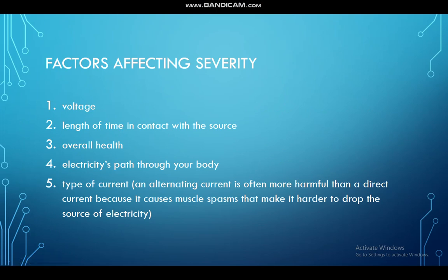The severity of the damage caused by the current depends on the following factors: the voltage, the length of time in contact with the source, and the overall health of the person. Electricity always chooses the path of least resistance through your body, so if it passes through a vital organ it is very risky. Additionally, alternating currents are more dangerous because they cause muscle spasm and the victim will latch on to the source of current.